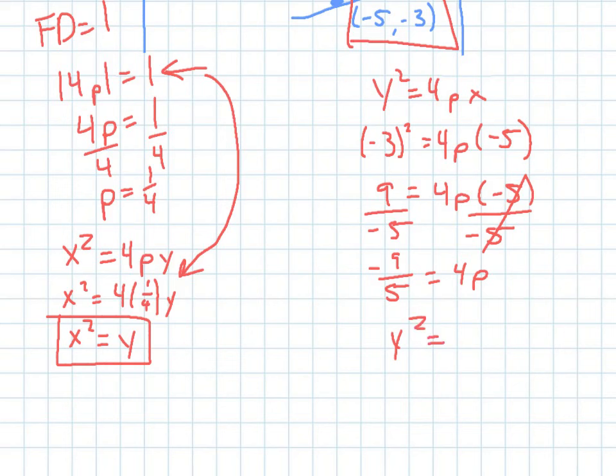So y squared is going to equal negative 9 fifths, because I'm inserting this in for that here. Times x. And that would be my answer. Okay? Have fun.